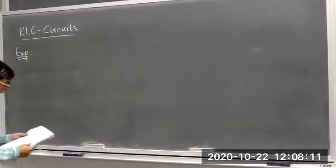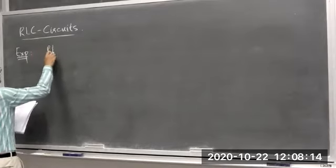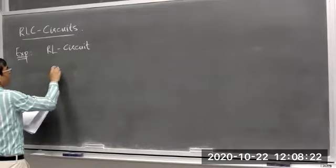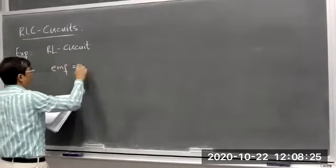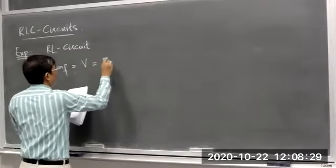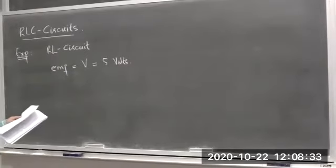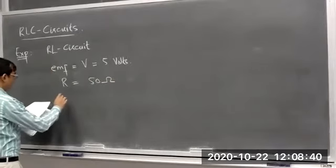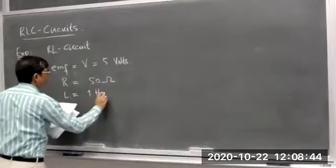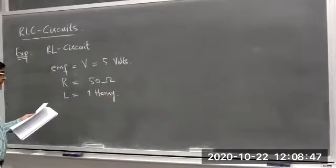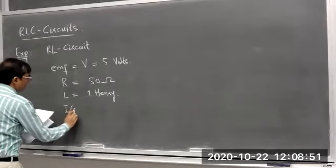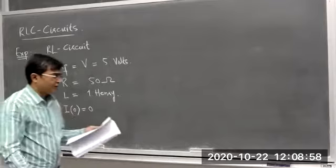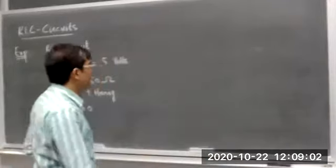For example, this one: an RL circuit has an EMF — EMF means electromotive force, which is the voltage difference — of 5 volts, and a resistance of 50 ohms, and an inductance L of 1 henry, with no initial current, meaning I(0) = 0. Find the current in the circuit at any time T, and also find the steady state current.